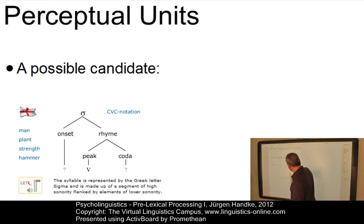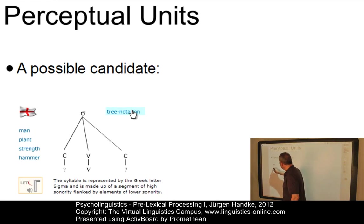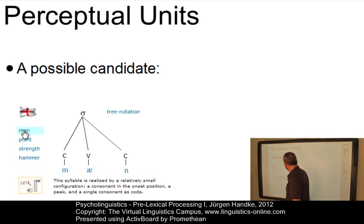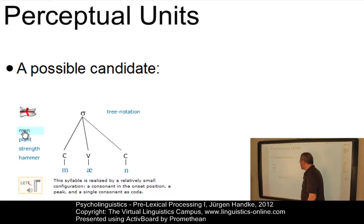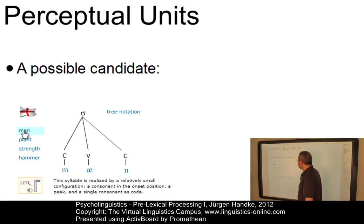The syllable consists of an onset, a peak, and a coda — this is the standard notation. For example, the syllable 'man' consists of the onset — a bilabial nasal — a vowel in the peak, and the coda, which is another nasal consonant.